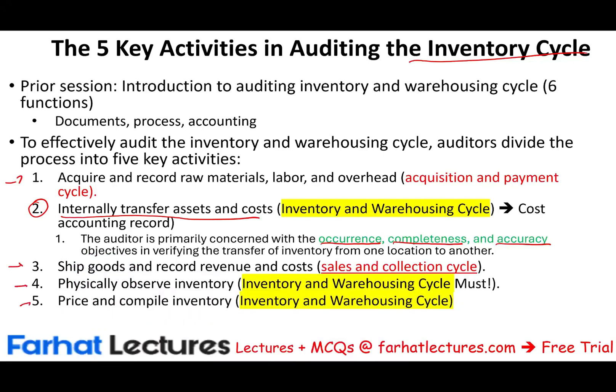The other activities are acquiring and recording the raw material, labor, and overhead — covered in the acquisition and payment cycle. Shipping goods and recording revenue and cost once assets are in finished goods is part of the selling cycle. The inventory cycle is interconnected to the purchasing cycle and the sales cycle. The other two topics within the inventory cycle, which we'll talk about separately, are the observation of inventory and how to price and compile inventory.